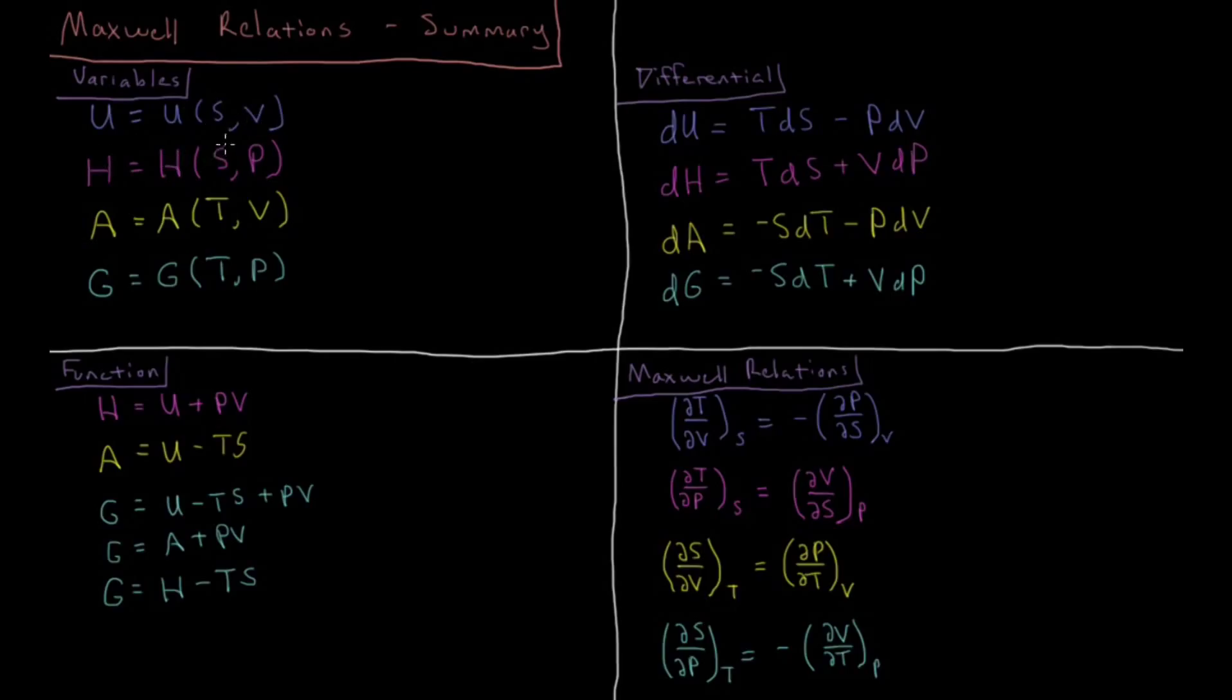enthalpy H is a function of S and pressure P, the Helmholtz energy A is a function of temperature T and volume V, and the Gibbs energy G is a function of temperature and pressure.